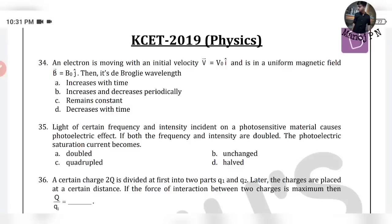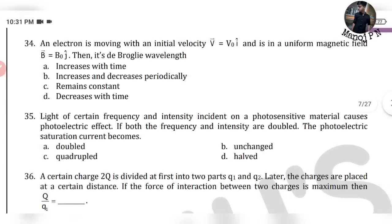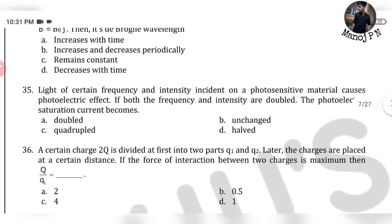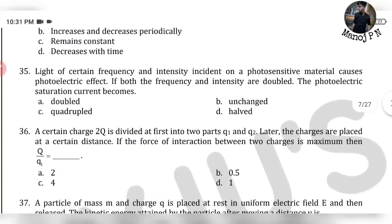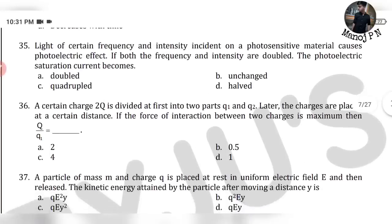34th question: An electron is moving with initial velocity vector v = v₀ î in a uniform magnetic field B vector = B₀ ĵ. The de Broglie wavelength remains constant. That is the 34th question's answer — it remains constant.